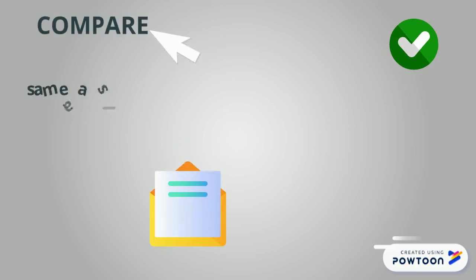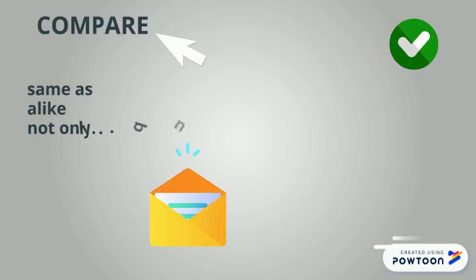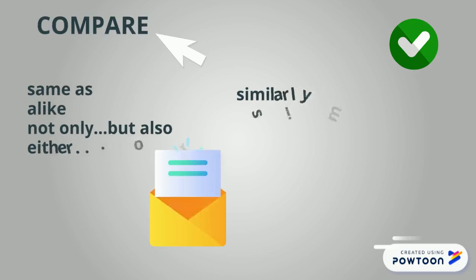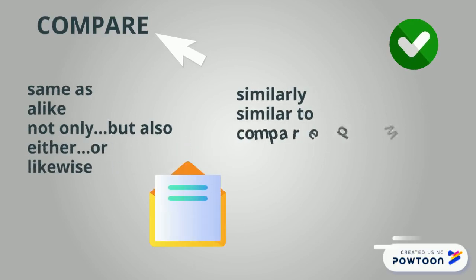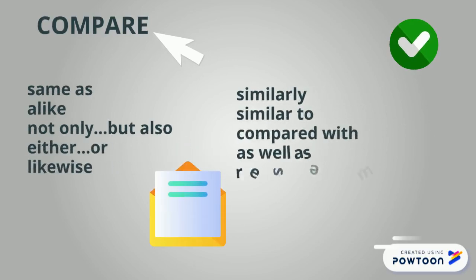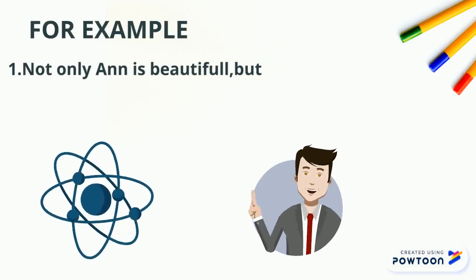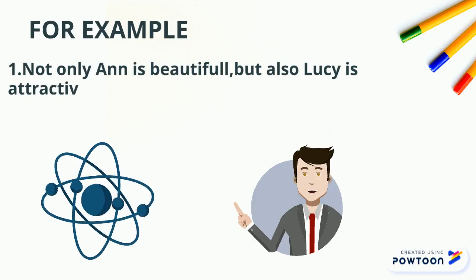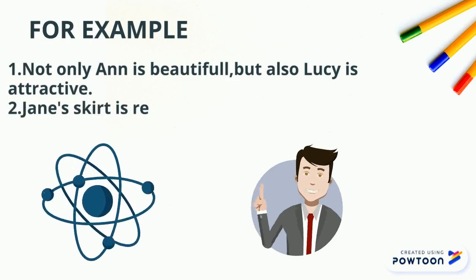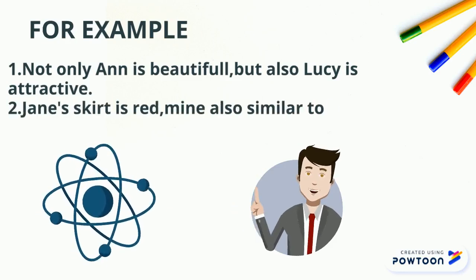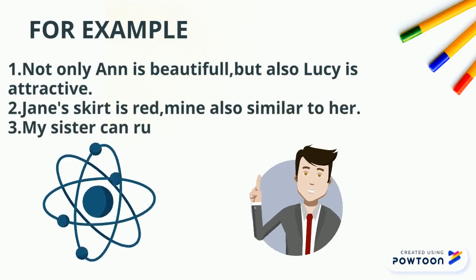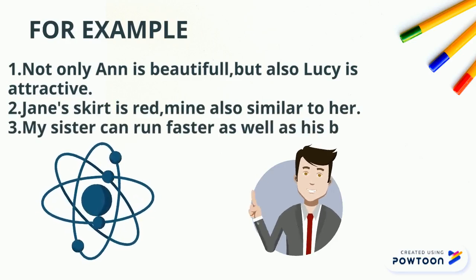Compare signal words include: same as, alike, not only...but also, neither, likewise, similarly, similar to, compare it with, as well as, resemble. For example: not only is Anne beautiful, but also Lucy is attractive. Jane's skirt is red, mine is also similar to hers. My sister can run faster, as well as her brother can.